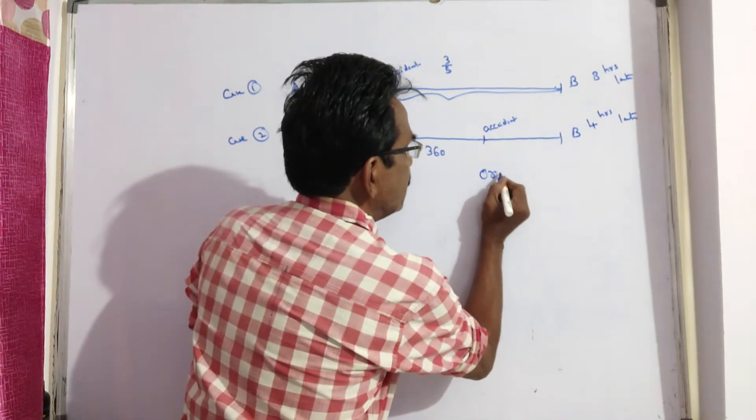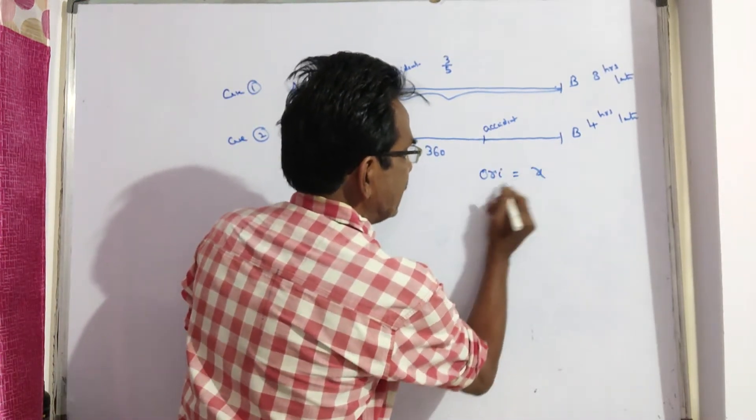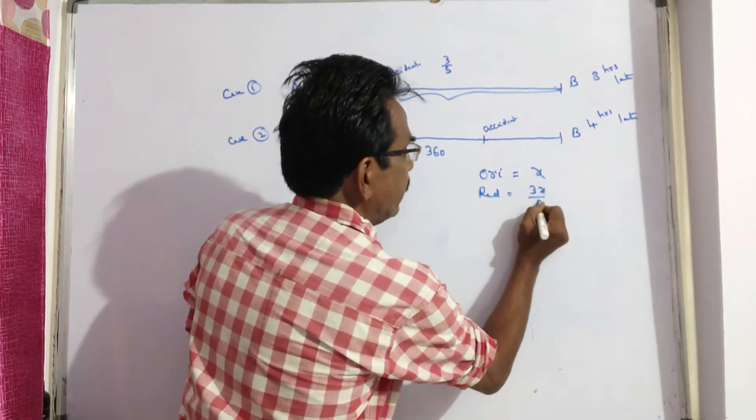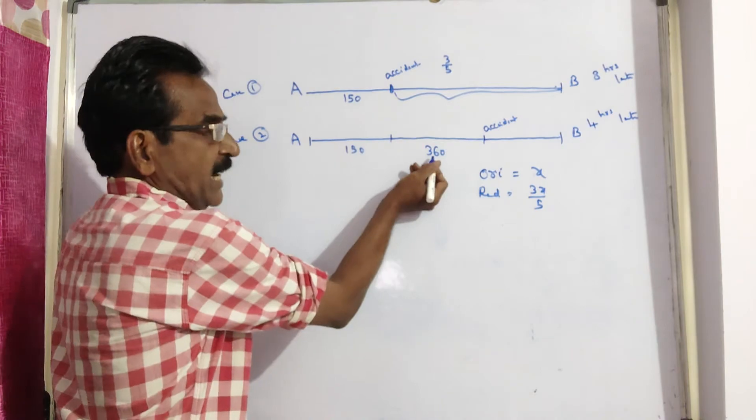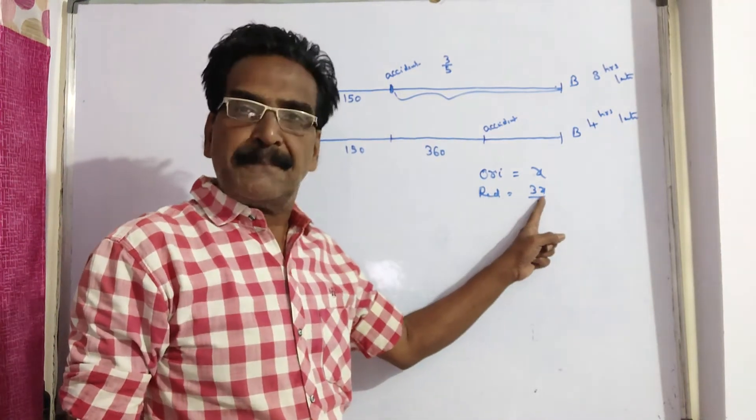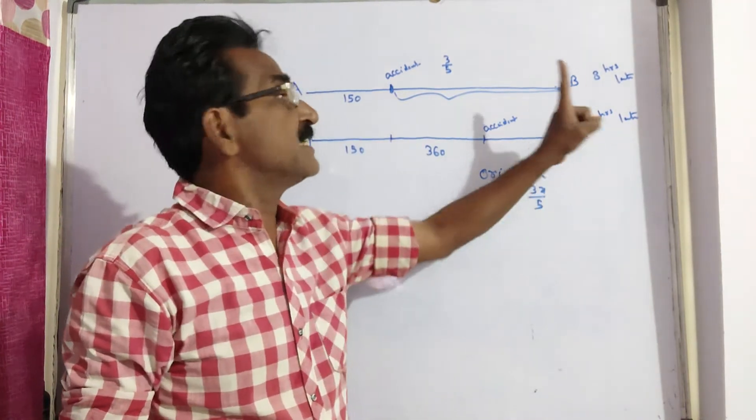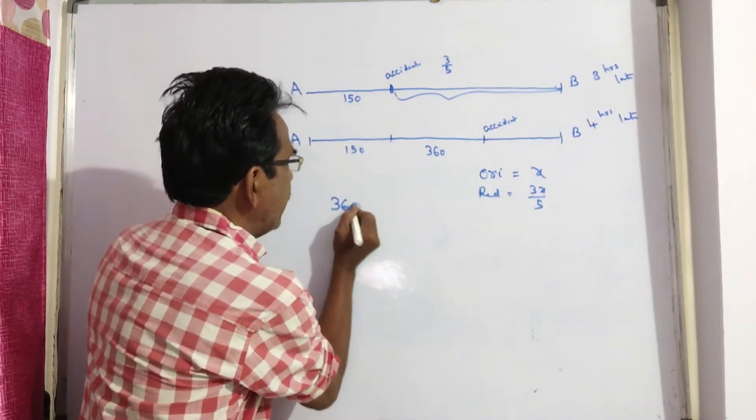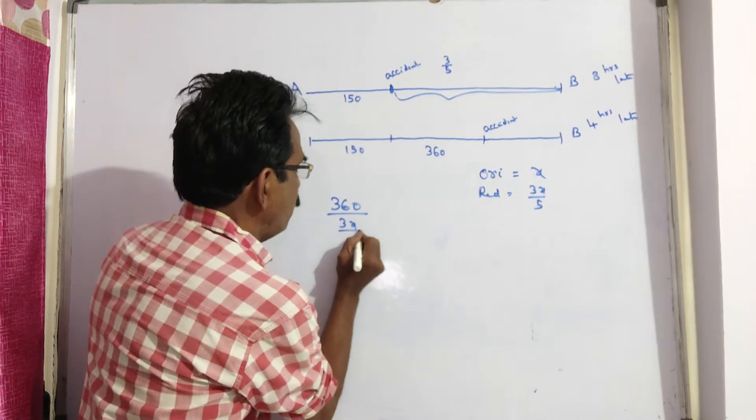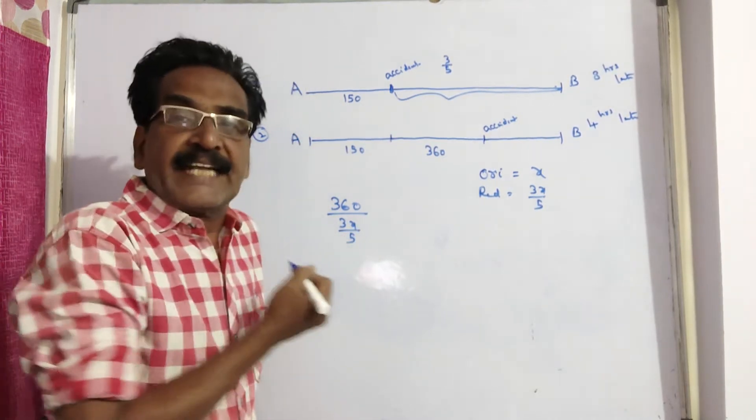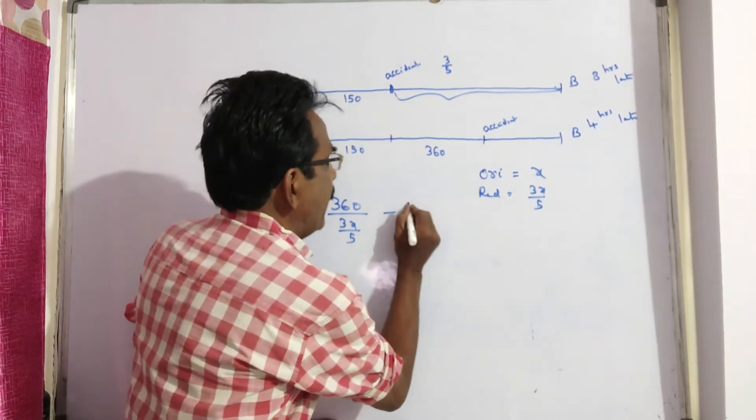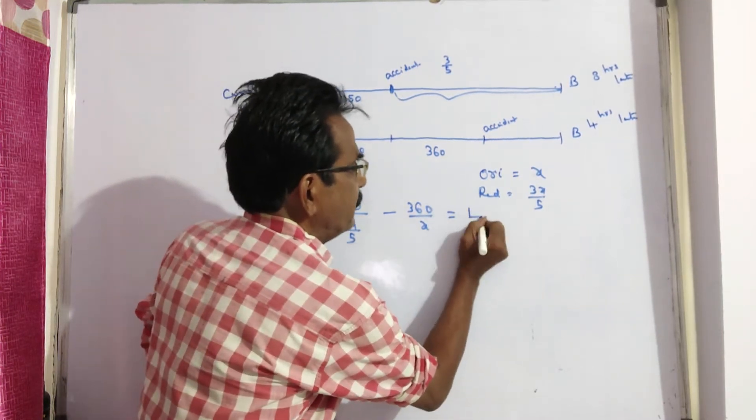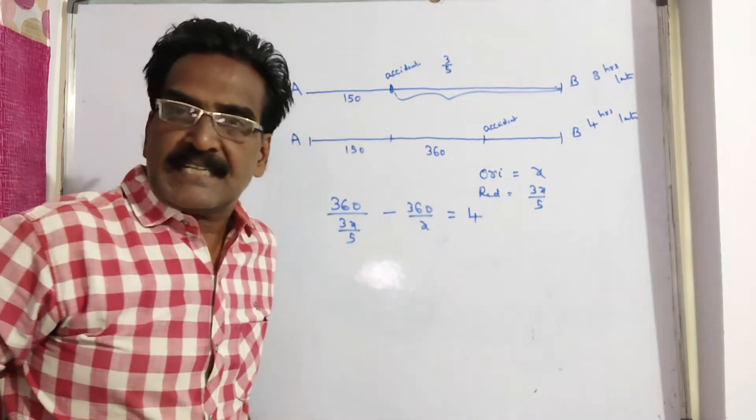Say original speed, original speed is x, then reduced speed is 3x by 5. So to travel this 360 km with reduced speed and original speed is equal to 8 minus 4, 4 hours. So 360 by 3x by 5, this is time taken to travel with reduced speed, and 360 by x, original speed, the time difference between these two is 4 hours.